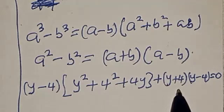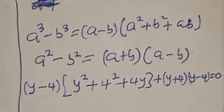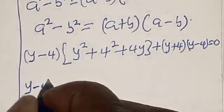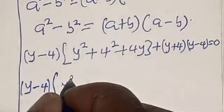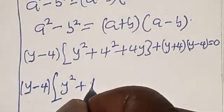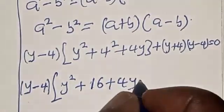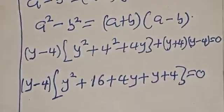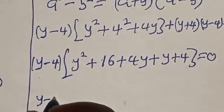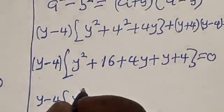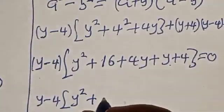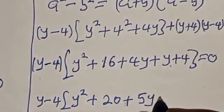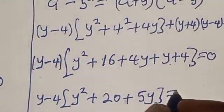Now (y minus 4) is common — let's factor it out. We have: (y minus 4) times (y squared plus 16 plus 4y plus y plus 4) equals zero, which simplifies to (y minus 4)(y squared + 5y + 20) equals zero.